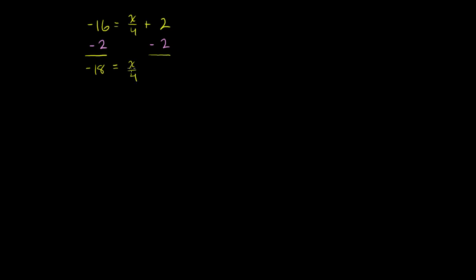Our whole goal here is to isolate the x, to solve for x. If we have x over 4, if we multiply that by 4, we're just going to have an x. But once again, this is an equation — anything you do to the right-hand side, you have to do to the left-hand side, and vice versa. So if we multiply the right-hand side by 4, we also have to multiply the left-hand side by 4.